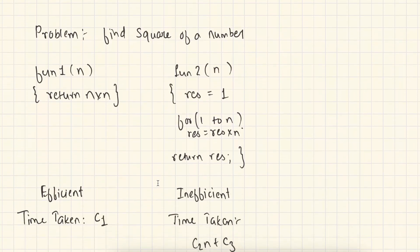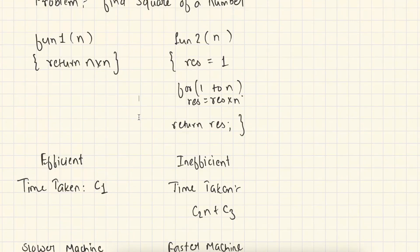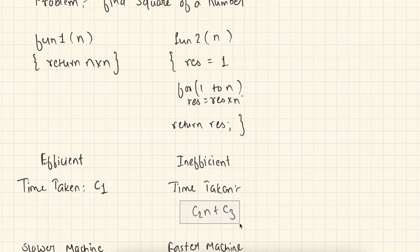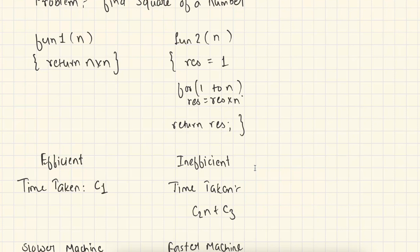Let's see with an example. Let's say we have a problem to find the square of a number and we wrote two programs. Function one is the efficient program because we are doing only a constant operation here, and the time taken to calculate the result is c1. On the other hand, the time taken by function two is c2n plus c3. Here we are doing a constant amount of operations n number of times, so it becomes c2n, and the other constant operations sum up to c3. We will calculate the order of growth of both functions and show how it helps us determine which function is better.